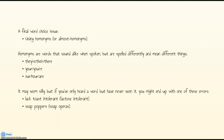Another word choice issue is when you use homonyms, or almost-homonyms. A homonym is a word that sounds alike when spoken but is spelled differently or means a different thing — like the there, their, and they're issue, or your and you're, or even our, hour, and are. We say them the same way, so pronunciation isn't going to distinguish which one, and you want to be careful about that.